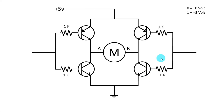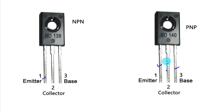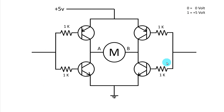Now let's see the pin diagram of the transistors. This is BD139 — it is an NPN transistor. The pins are: base, collector, and emitter. For the PNP transistor, BD140: the third pin is base, the middle is collector, and the first is emitter. Now we will see this circuit built on a breadboard.